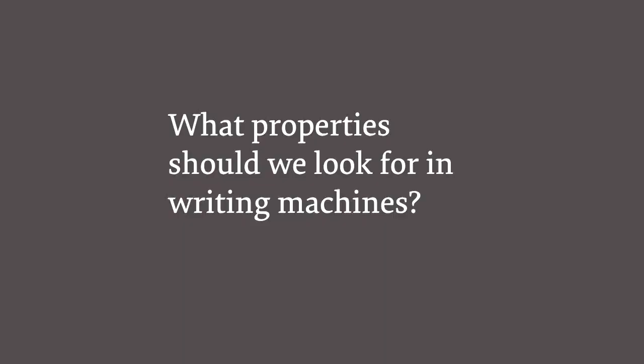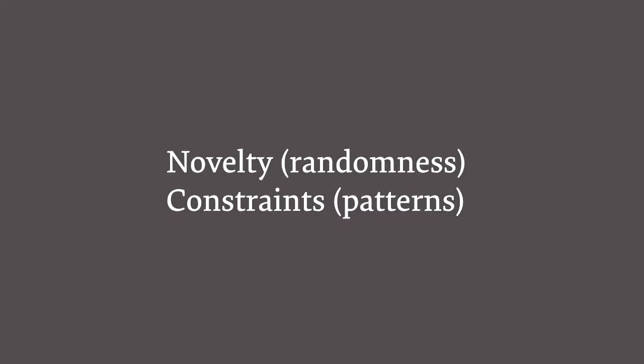With a bit of background on writing machines and where they've come from, let's think about what writing machines need to do — what properties should they support so their output is recognisable to us as readers as writing? The way I look at it is that the function of writing machines is a combination of novelty and constraints. With novelty, we want the outcome to surprise us, to be different each time. But we also want it to have a certain form and shape that's familiar — with patterns and repetition — because that's how storytelling works and how we make sense of the world.